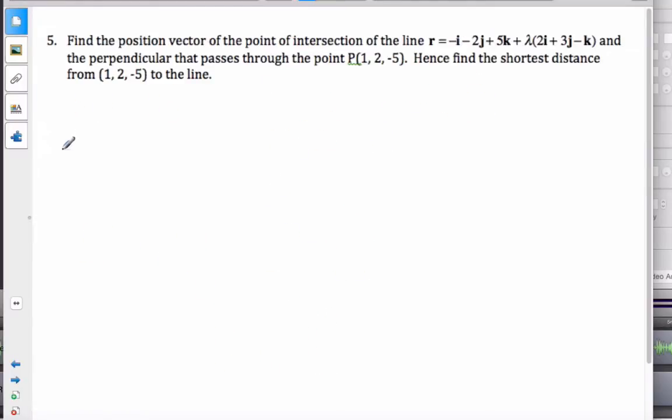And one more example here. We want to find the position vector of the point of intersection of this line and the perpendicular that passes through the point. Hence, find the shortest distance to the line. We need to think carefully about this. We have a vector equation here. And we can say that this is, let's say, the point (-1, -2, 5). And this is the direction (2, 3, -1).